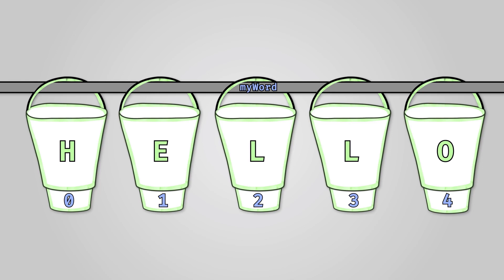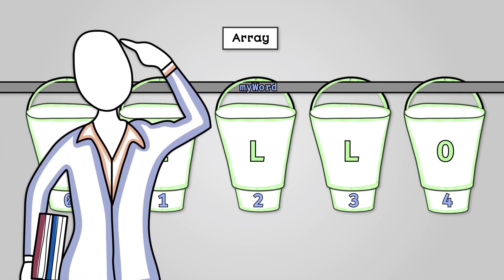This is exactly what an array is. A string is a one-dimensional array of character variables. By one dimensional we mean a single row going in one direction horizontally. However, the main purpose of an array is that although each bucket needs to be the same type, you can have arrays of different data types.